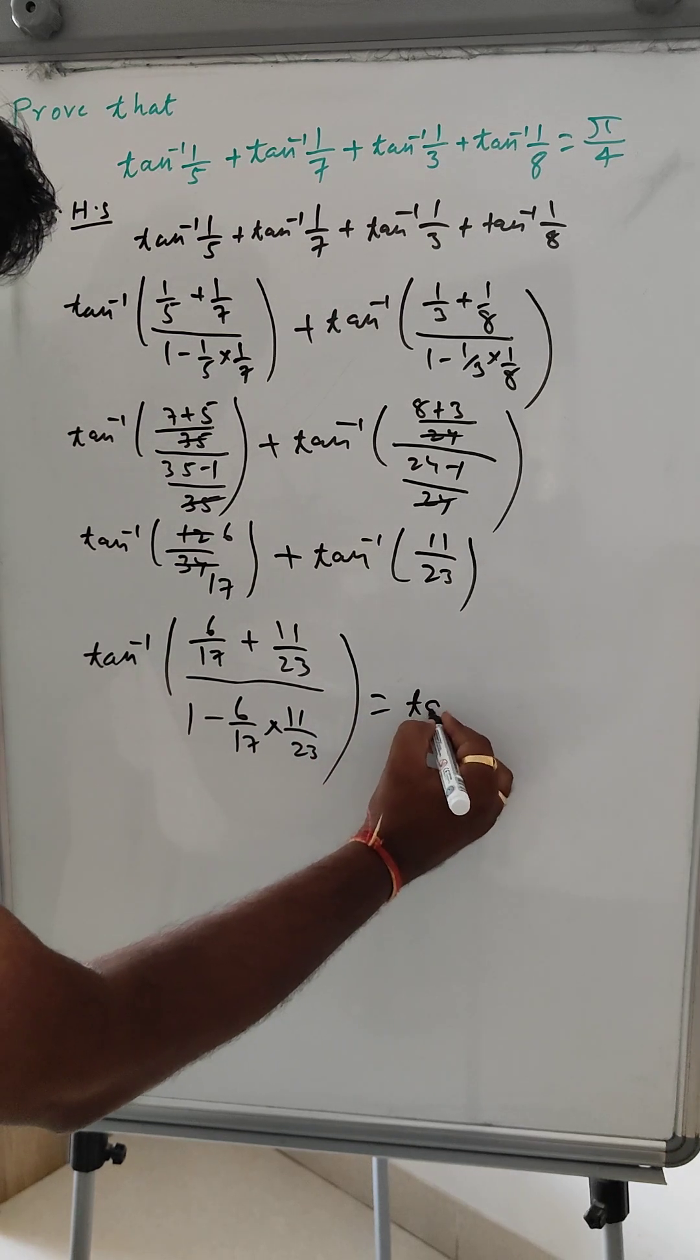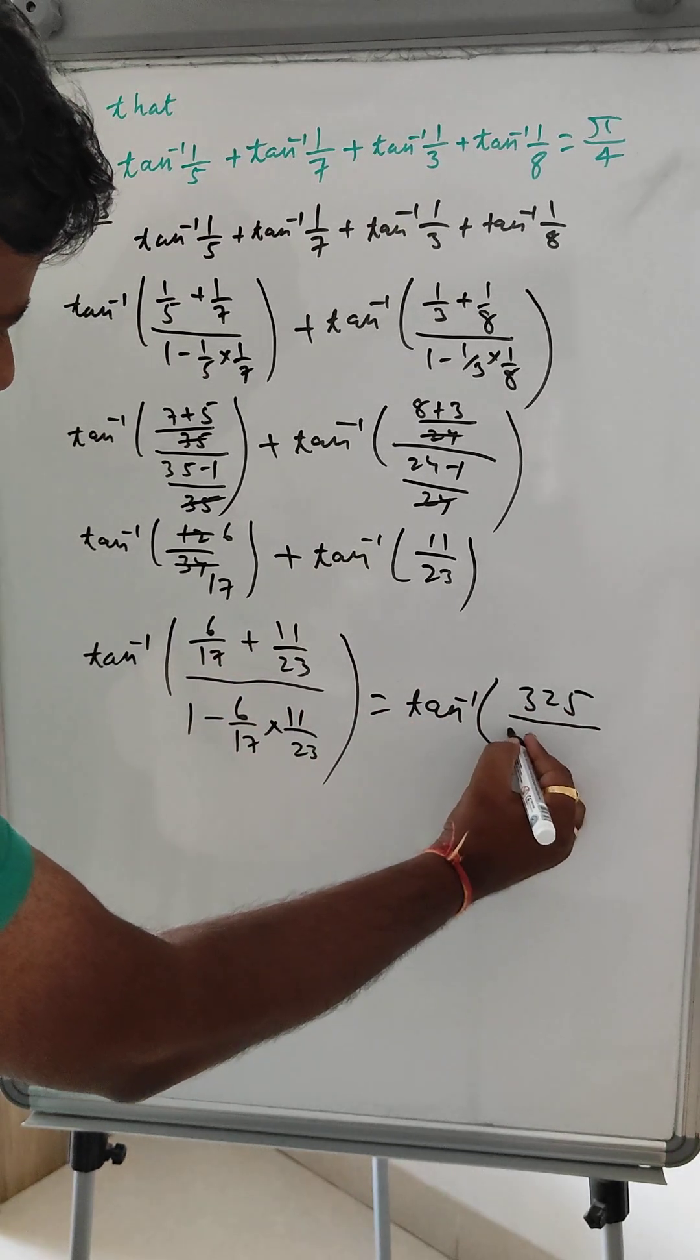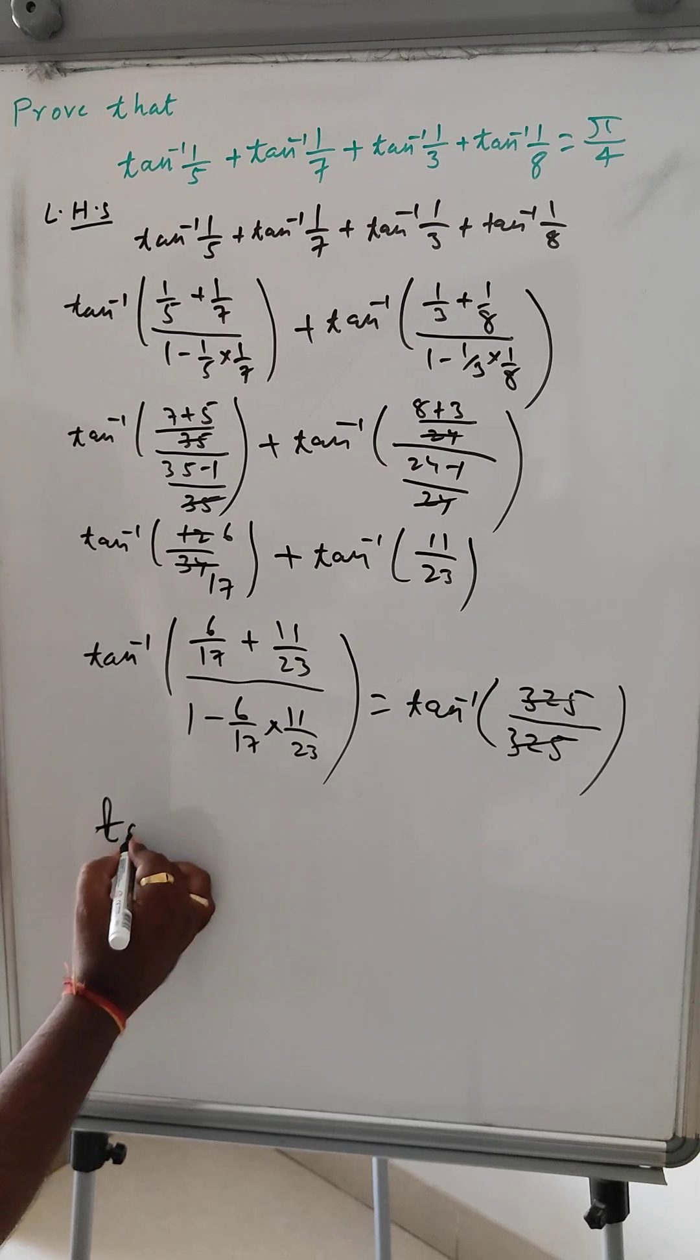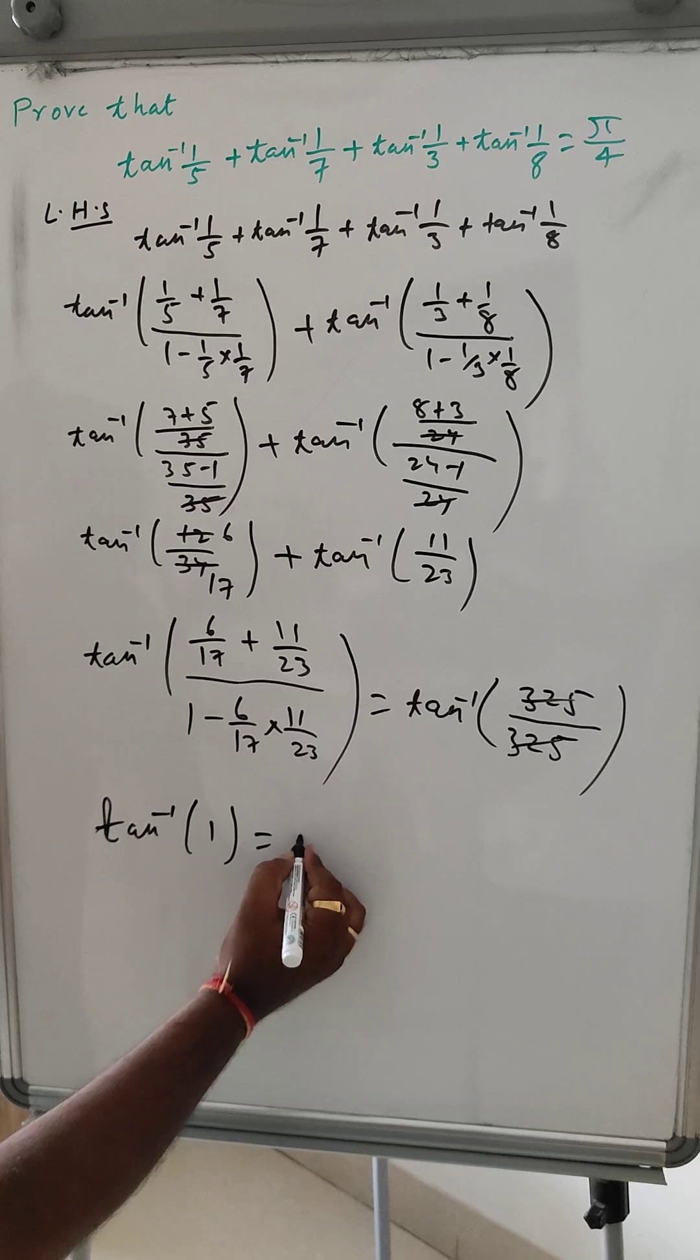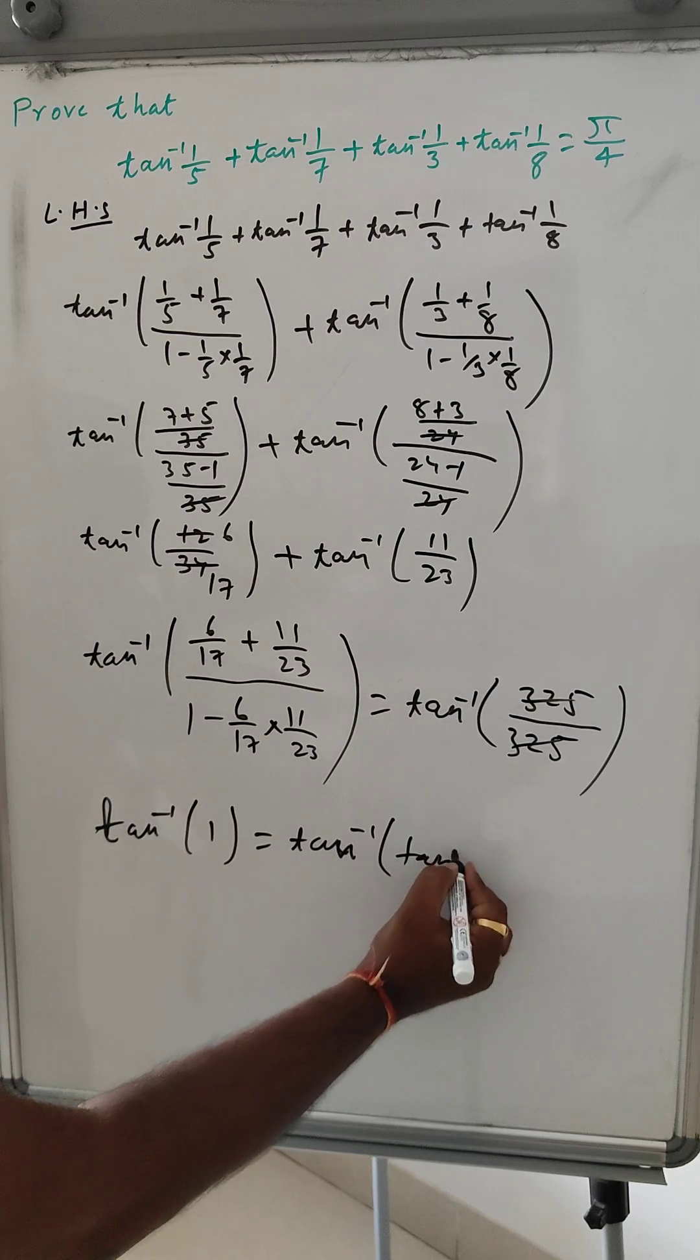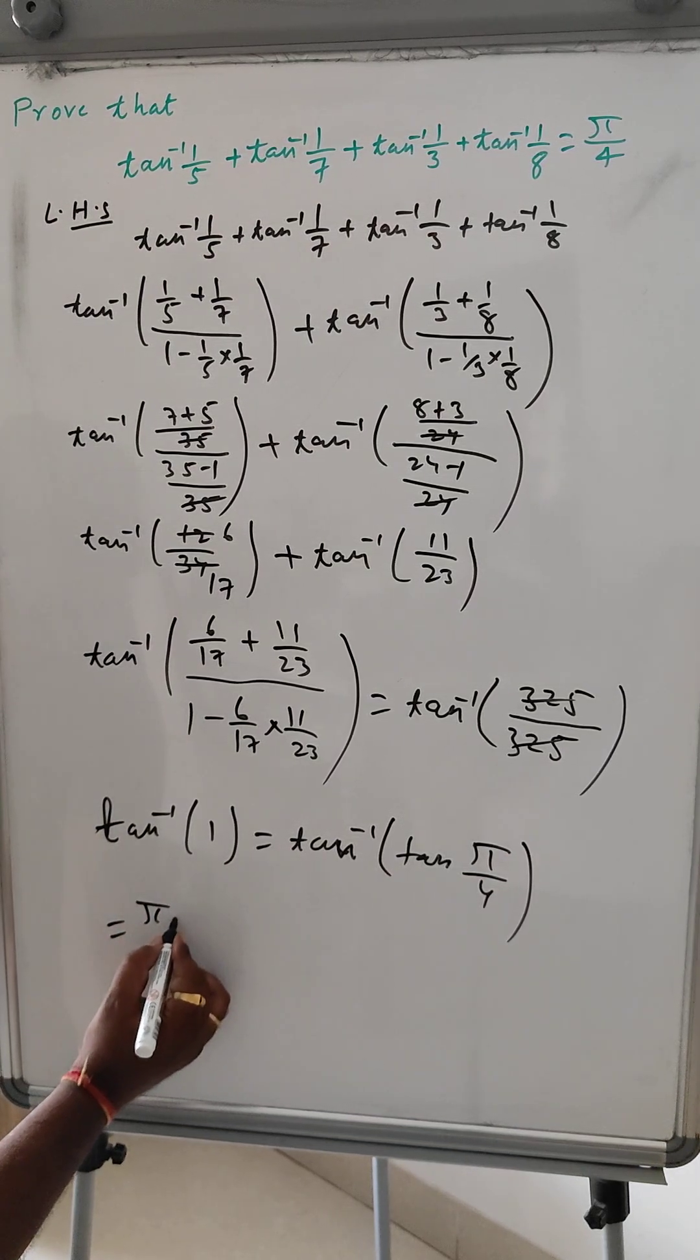Which is nothing but tan inverse, if you calculate this will become 325, here also 325, so 325, 325 cancelled. Now this is tan inverse 1. Tan inverse 1 is nothing but tan pi by 4. Pi by 4 value is 1, so now this is pi by 4.